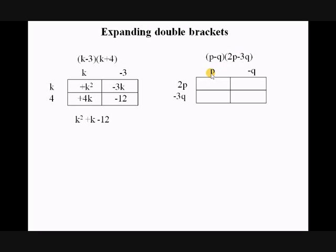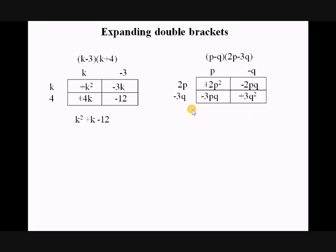Here's another example: (p minus q) times (2p minus 3q). Again I've drawn the grid with p and minus q along one side, and 2p and minus 3q along the other, and I start multiplying out. 2p times p gives 2p squared; 2p times minus q gives minus 2pq. Then minus 3p times p gives minus 3pq. And lastly, minus times minus gives a positive answer.